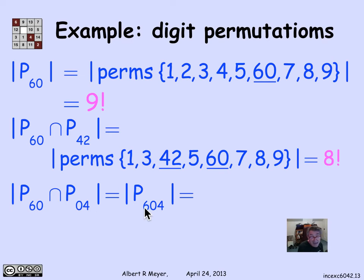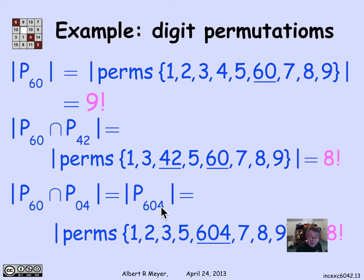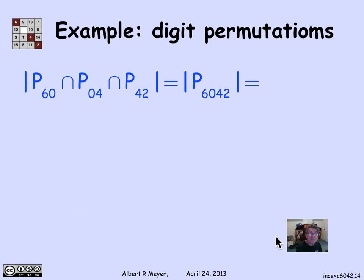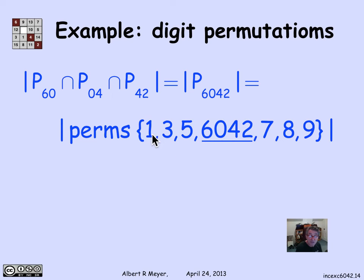Finally, how many permutations have all three patterns 6-0, 0-4, and 4-2? That is exactly the same as sequences with the single four-digit pattern 6-0-4-2. We count that as permutations of the six remaining digits plus the object '6,0,4,2' — seven objects total — giving 7 factorial. Similarly, P04 intersection P42 is the set of sequences with pattern 0-4-2, also giving 8 factorial.